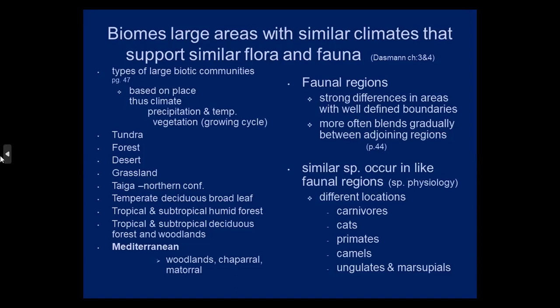At different boundaries, you'll have a gradual change in species — it won't always be instant. Sometimes it's well-defined, sometimes not. Similar species occur in like faunal regions, and this is based on the species' physiology. In different locations, we'll have primates in Africa and in South America. In Africa these primates are different — the ones in South America have prehensile tails, but in Africa they don't.